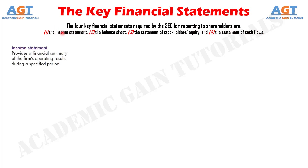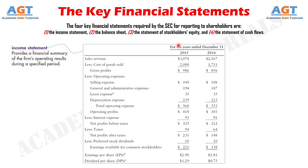The income statement provides a financial summary of the firm's operating results during a specified period. Most common are income statements covering a one-year period ending at a specified date, ordinarily December 31st of the calendar year. Many large firms, however, operate on a 12-month financial cycle or fiscal year that ends at a time other than December 31st. In addition, monthly income statements are typically prepared for use by management, and quarterly statements must be made available to the stockholders of publicly owned corporations. This table presents a company's income statements for the years ended December 31st, 2015 and 2014.